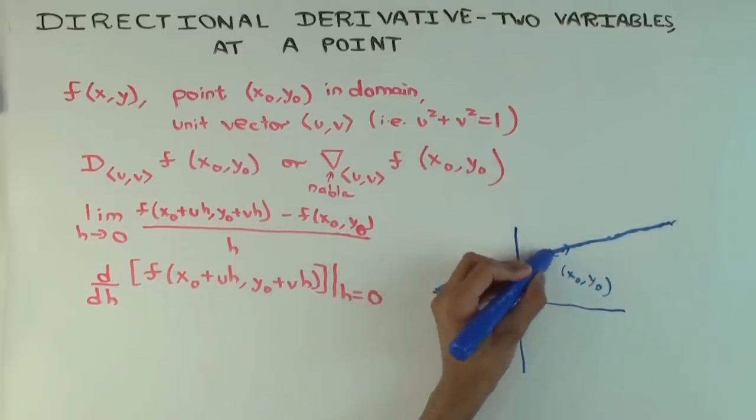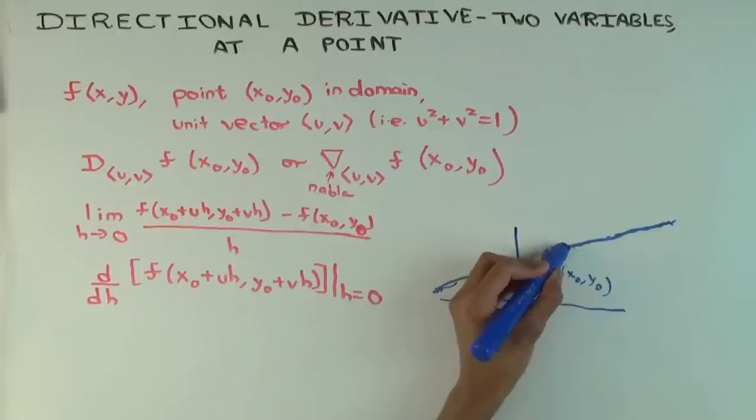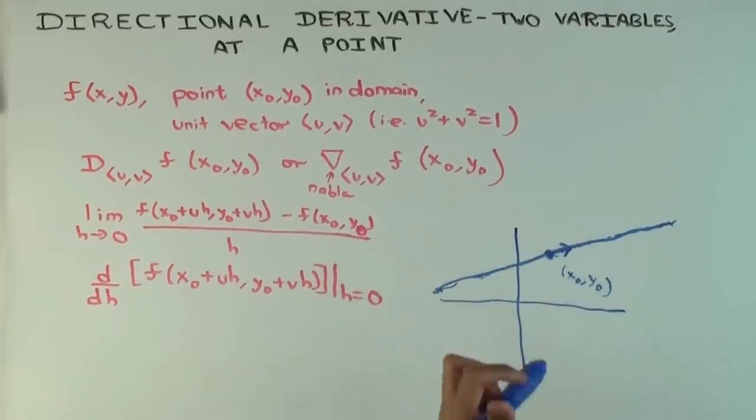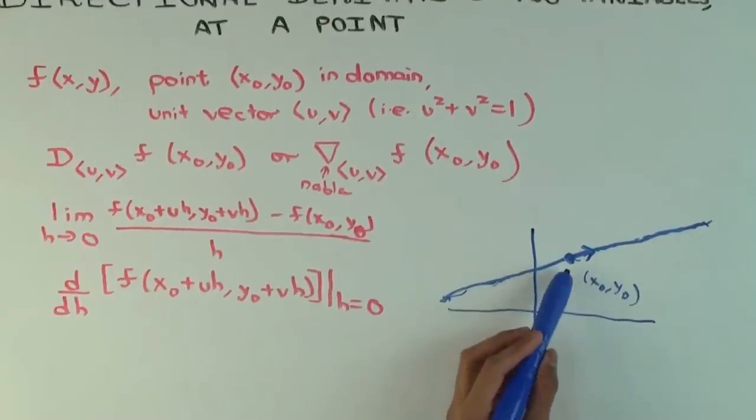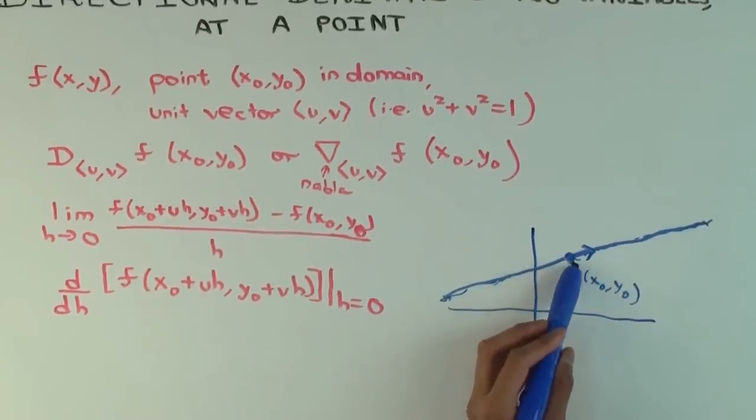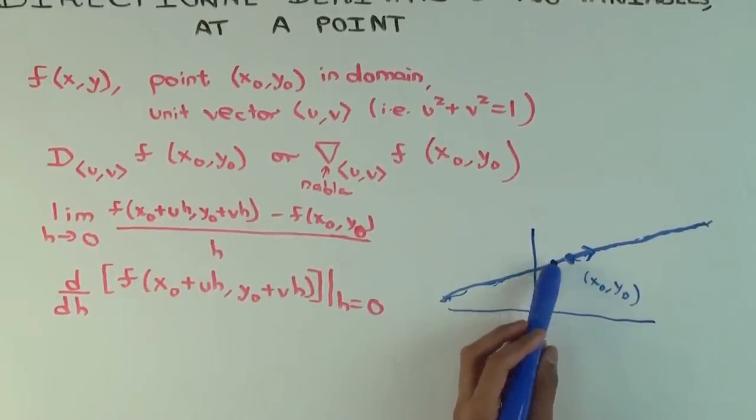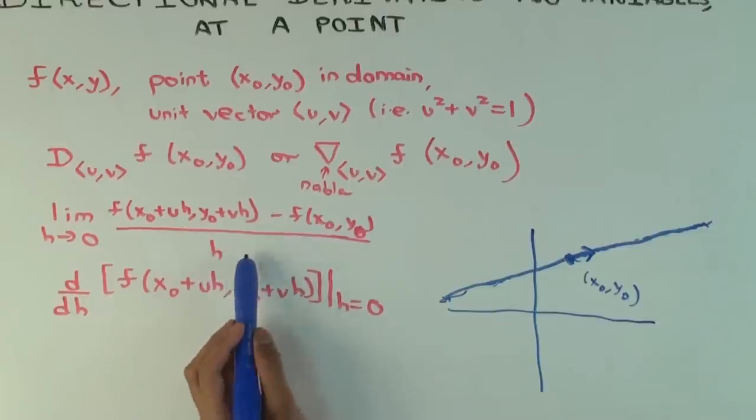So this is the point and this is the unit vector. Now what we are interested in is if you move slightly along this line, how does the function value change relative to the amount you moved. That's what this is doing.